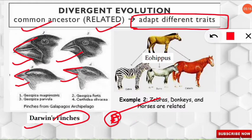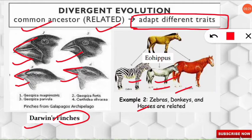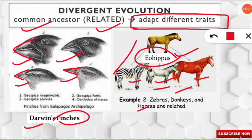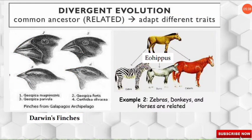Another example of divergent evolution is the evolution of zebra, donkeys, and horses. They are related because they share a common ancestor known as Eohippus — you should note that down. From this common ancestor, they diverged and became three different individual species: zebra, donkeys, and horses.